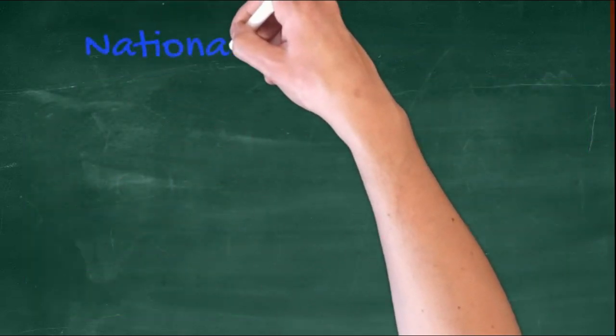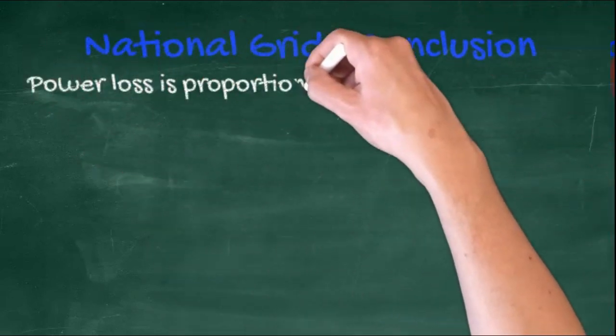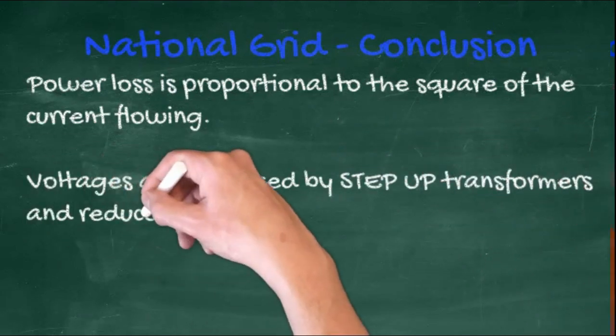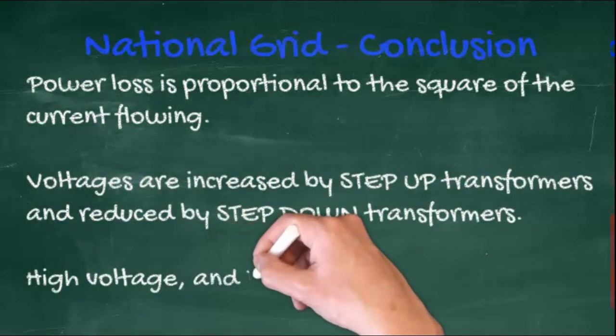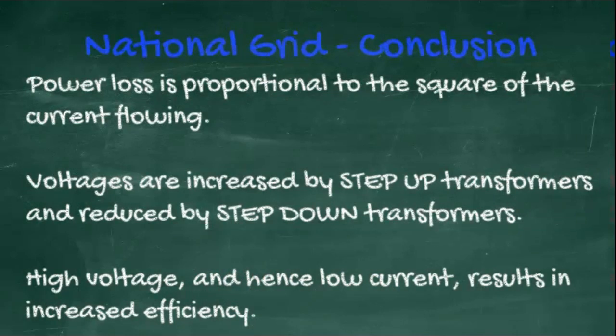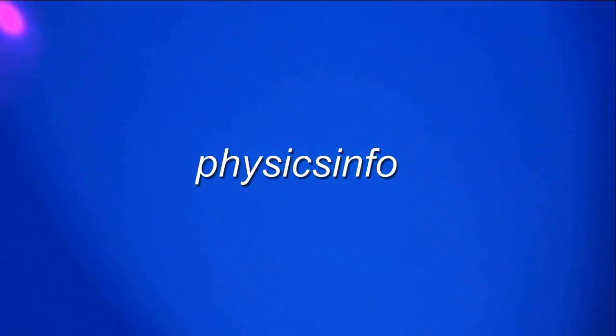In conclusion, power loss is proportional to the square of the current flowing. Voltages are increased by step-up transformers and reduced by step-down transformers. High voltages, and hence low currents, result in increased efficiency. And that's it. Thank you for watching.